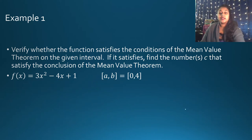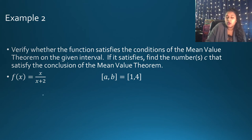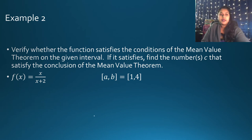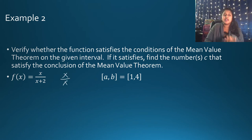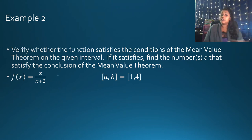Here is a slightly more complicated question. We have F(X) as a rational function, so we need to check if it is continuous and differentiable. For continuity, I would check by plotting the graph or testing between 1 and 4. If we plot this graph, between 1 and 4 it is continuous. I could have plotted it using knowledge of the parent function and transformations, or made an XY table, or used a graphing calculator.